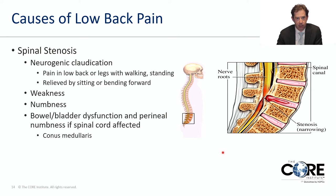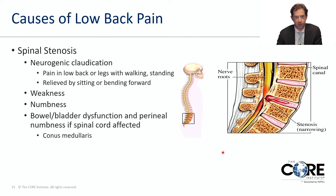Basic symptoms of spinal stenosis include pain, pain in the legs, weakness, and numbness. If the conus medullaris is affected, patients can have difficulties controlling bowel and bladder function — developing numbness in the genital region and potentially losing bladder control. Typical symptoms worsen with prolonged standing or walking and improve with sitting or bending forward. A common sign is the shopping cart sign, where flexing the spine forward by leaning on a cart relieves pressure, pain, and enables walking longer distances.